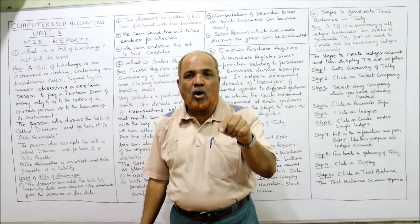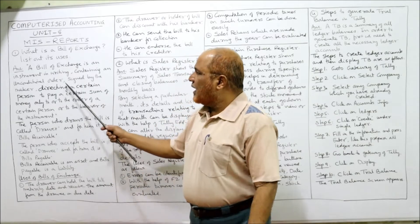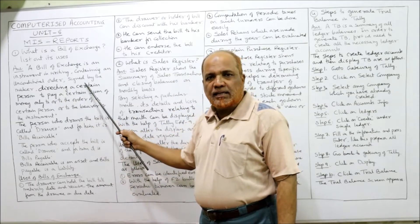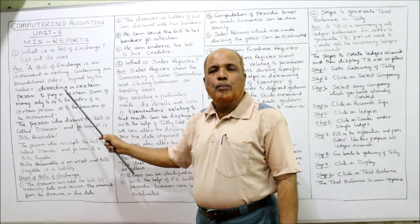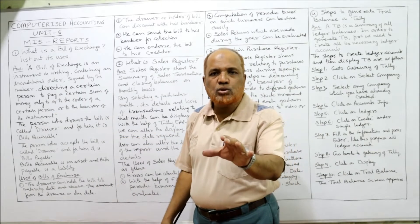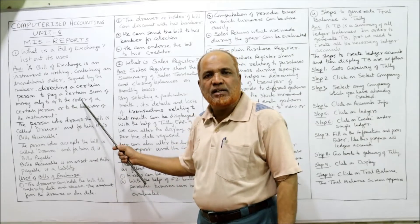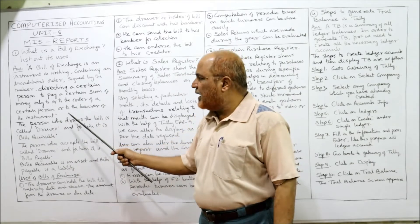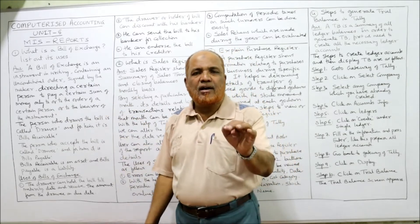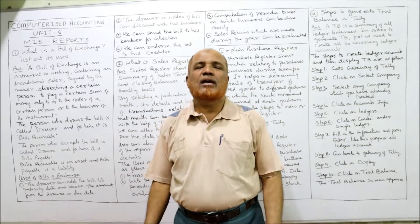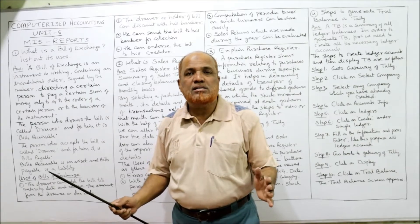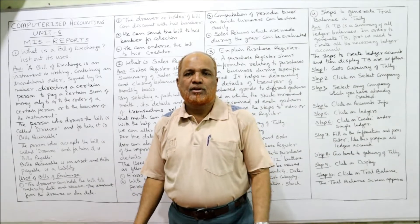A bill of exchange contains an unconditional order, signed by the maker, directing a certain person to pay a certain sum of money only to or to the order of a certain person, or to the bearer of the instrument. This is the specific definition given by the Negotiable Instrument Act.